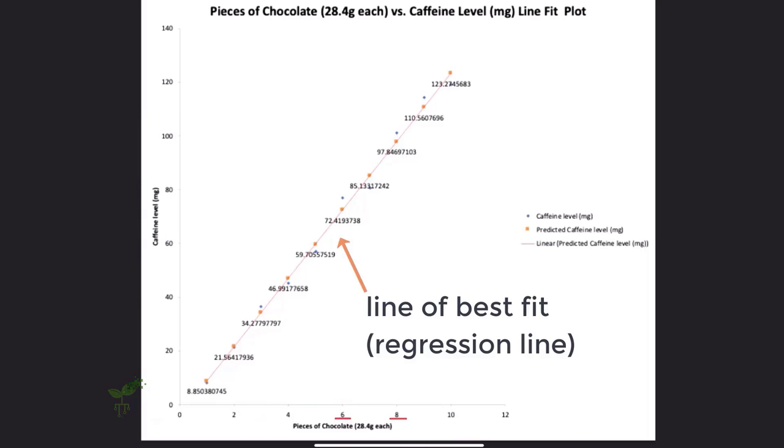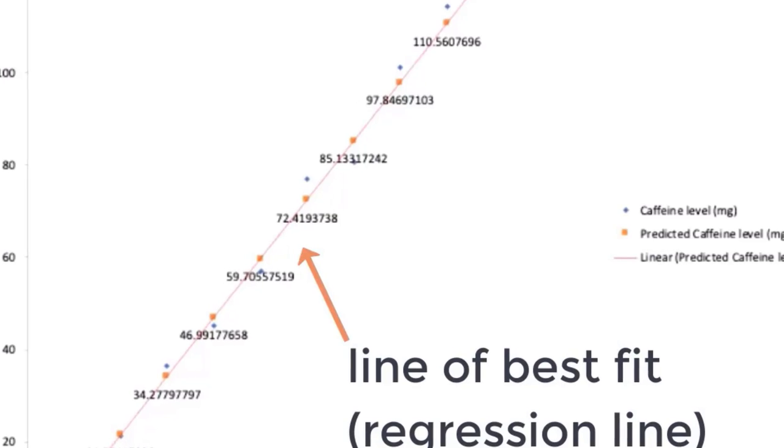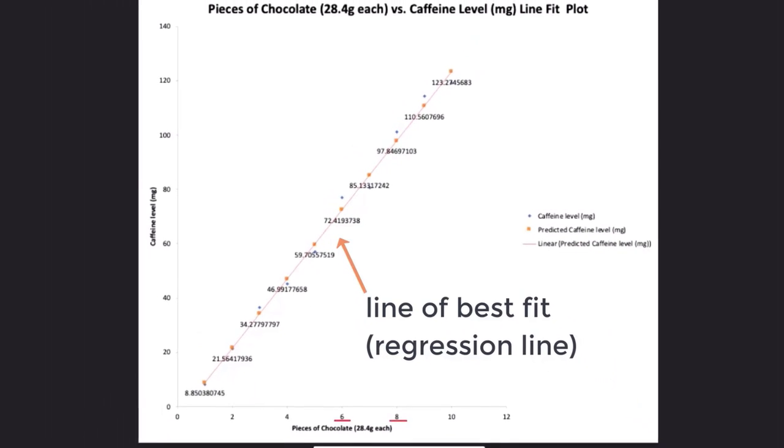You can see that some of the actual results, the blue dots, deviate from our predicted results using our line of best fit. In this video, we will introduce a measure to evaluate how well our model can predict the actual results of the experiment.